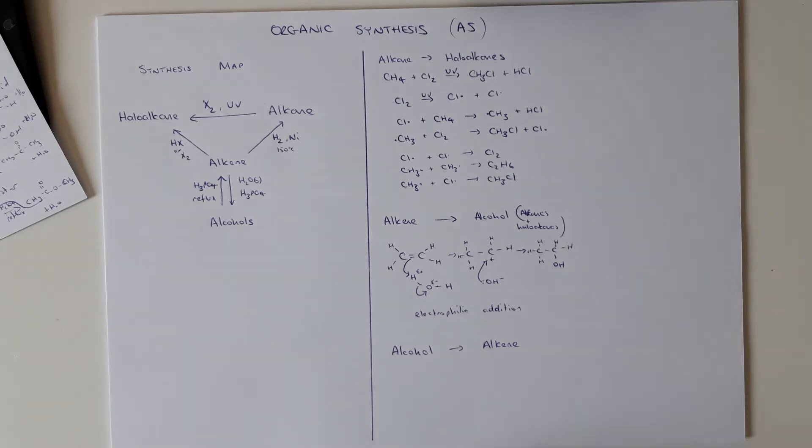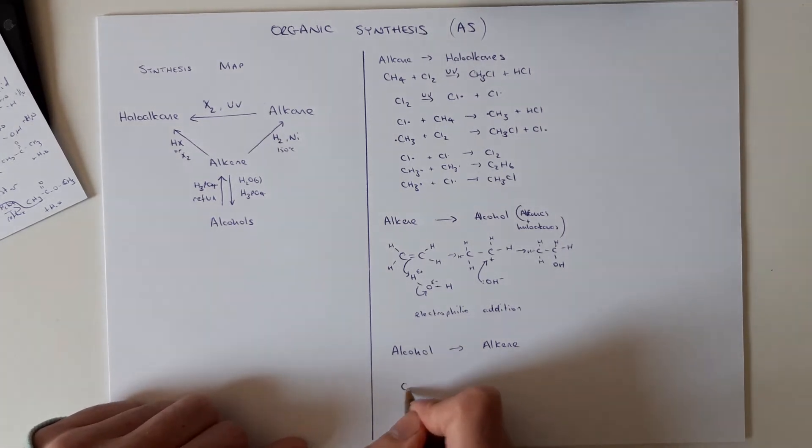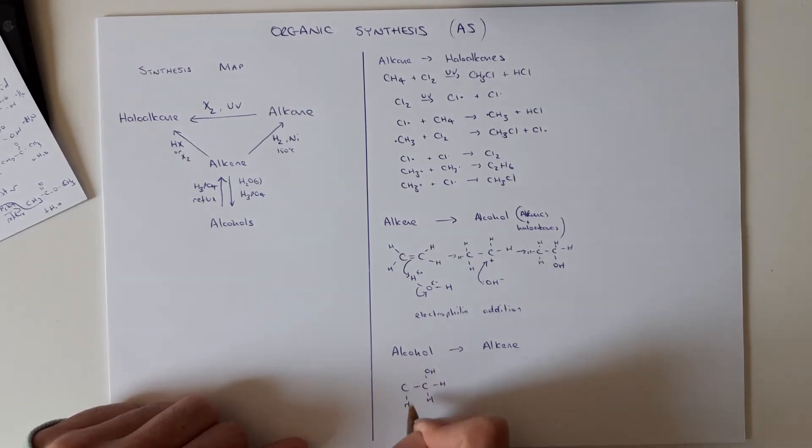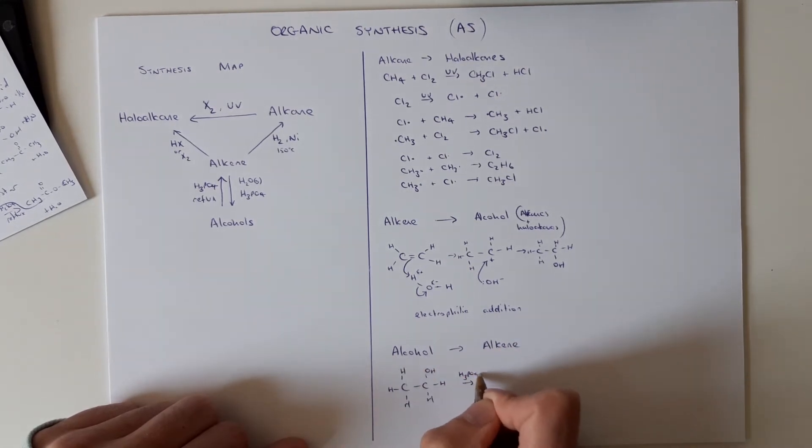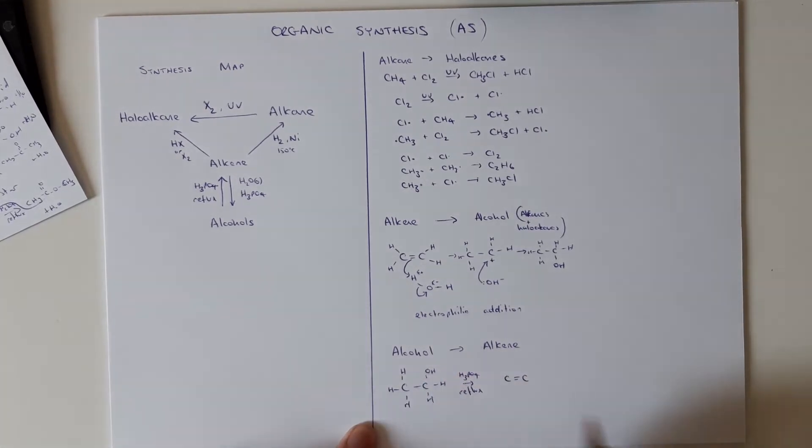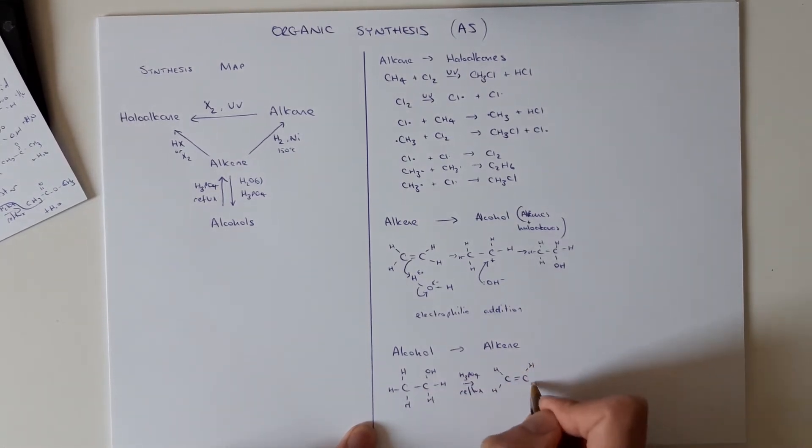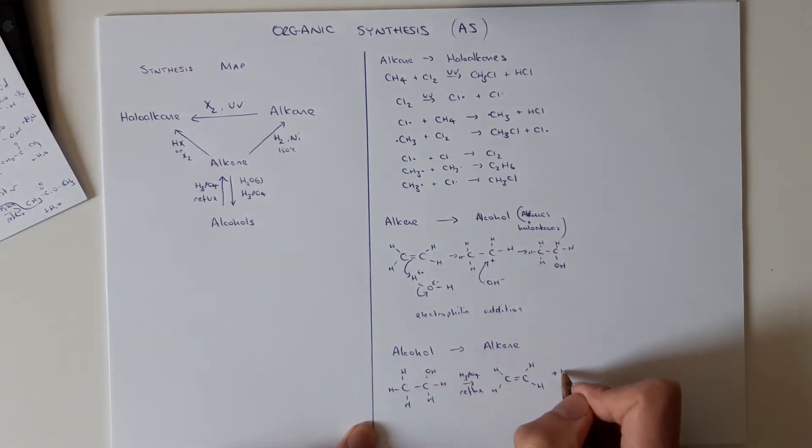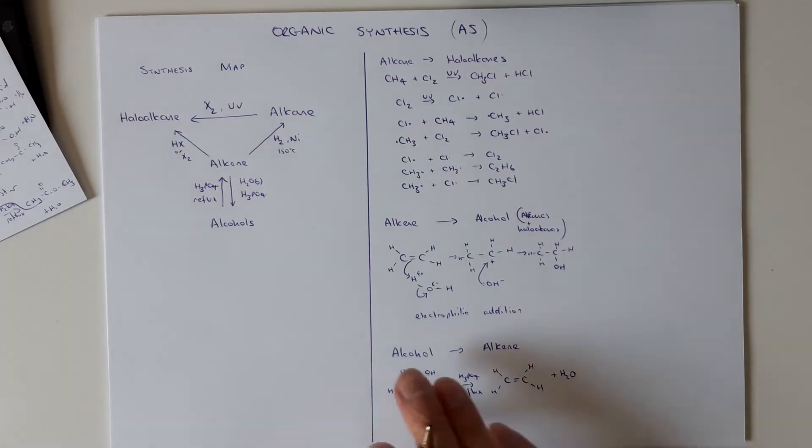So in this reaction, we're just going to take our alcohol, let's do ethanol. And in the presence of H3PO4 and reflux, so heat it up, the OH and a H from a neighboring carbon break off. That then leaves us with an alkene because these carbons need to bond four times and they've lost water. So that's alcohol to alkene. That's dehydration.